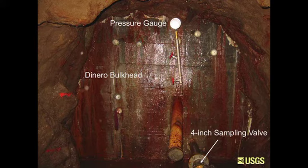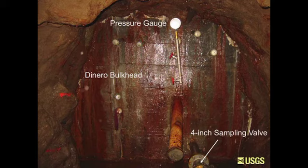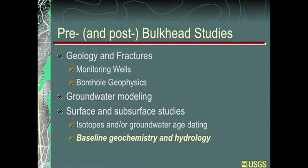This is a picture of the Denaro bulkhead after closure — it's been closed now for three years this fall. It has a relief valve, and you can see it leaks a little bit — from about one to five gallons a minute — but the previous flow was 40 to 80 gallons a minute, so we've had a very nice reduction in flow. We'll look at some of the things you can do before and after a bulkhead to initially try and decide if the bulkhead's going to do a good job, and then what to look at after to make sure it's doing a good job. Some of the things you can use to understand what's going to happen when the hydrology changes include having a good understanding of geology and fractures, monitoring wells, borehole geophysics, groundwater modeling, and additional subsurface and surface studies.